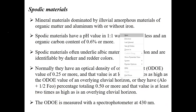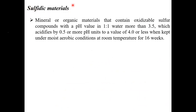Sulfidic material mostly appears in acid sulfate soils wherever sulfur and iron compounds or sulfur and iron oxides are present. It is mineral and organic material that contain oxidizable sulfur compounds, with a 1:1 water pH of 3.5. It acidifies by 0.5 or more pH units to a value of 4 or less when kept under moist aerobic conditions at room temperature for 16 weeks. Keyword for sulfidic material: content of oxidizable sulfur, very important.